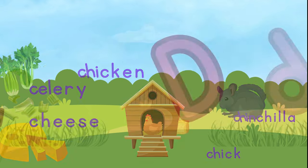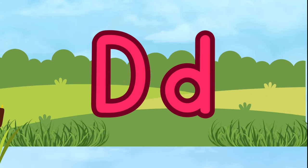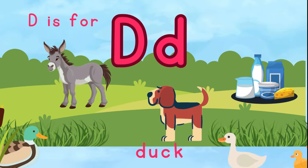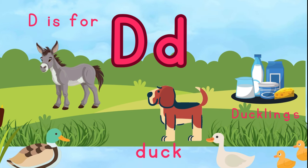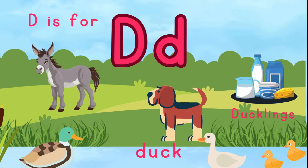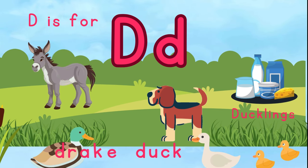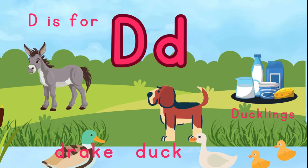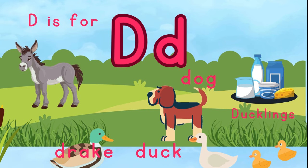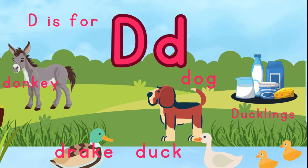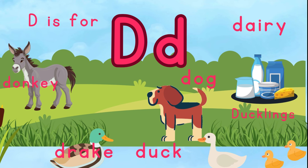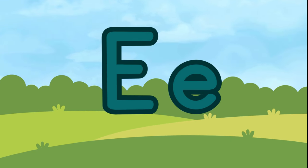This is the letter D. D is for duck. D is for ducklings. D is for drake. D is for dog. D is for donkey. And D is for dairy.